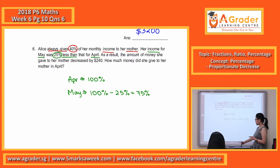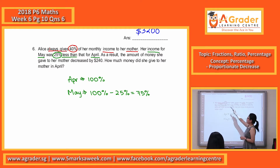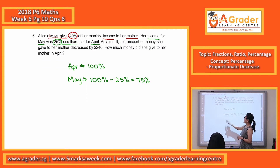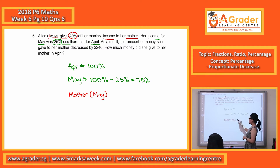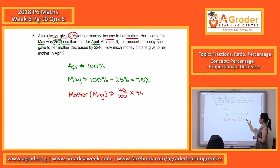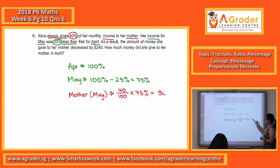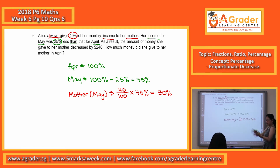Now we go back to our first line, which mentions 40% given to the mother. So for April, 40% is given to the mother. But for May, it will not be 40% directly. The income given to the mother in May — please take note — it will be 40% of the 75%, which will actually be 30%. So from the 75% she's earning, she will take out this 30% to give to the mother.